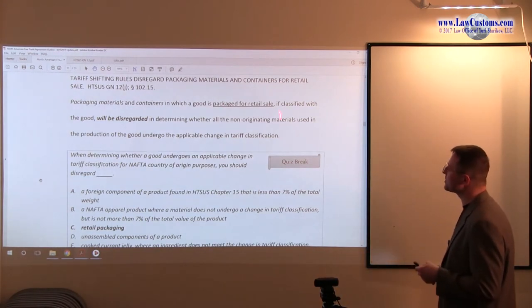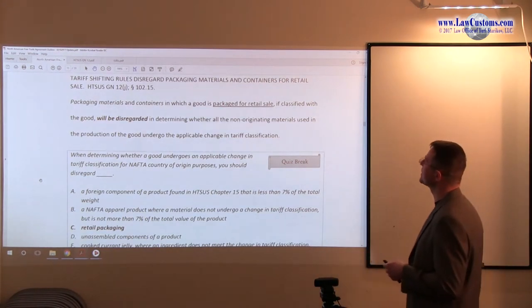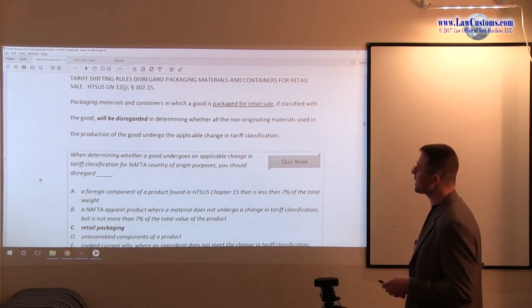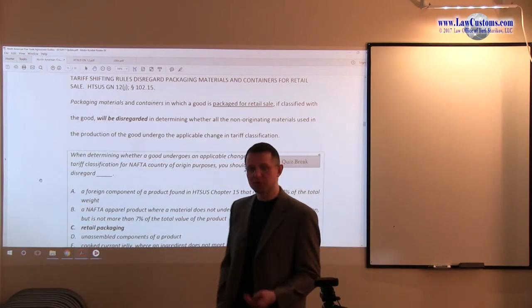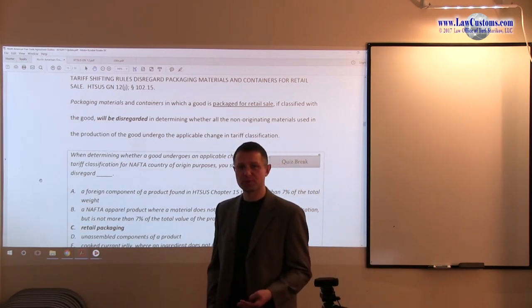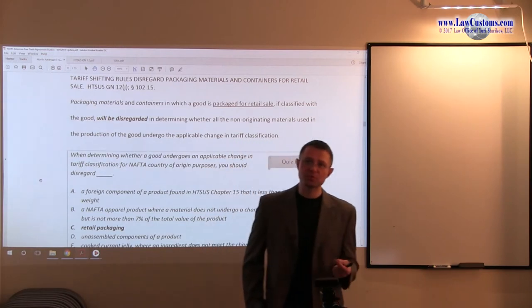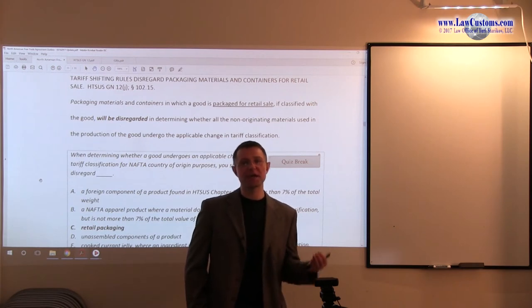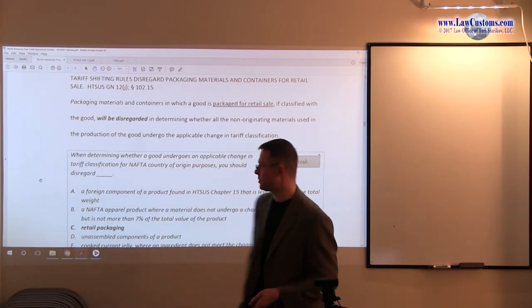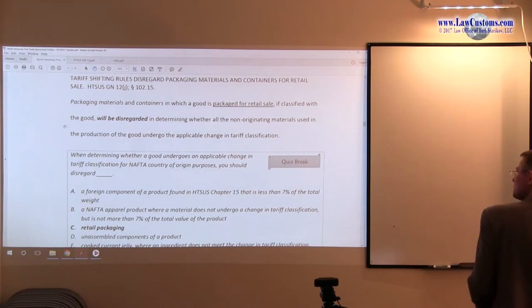Specifically, if you have a retail sale, and retail sale is the key, and if it is classified with a product, that packaging, you can disregard the value of that packaging in determining whether or not whether all of non-originating materials used in the production undergo applicable tariff classification. In other words, you don't have to include it in your calculation formula, even though you may be tempted to, because the general rule of interpretation 5 says that it kind of merges in with a tariff number. So let's see how a customs examiner starts doing this.